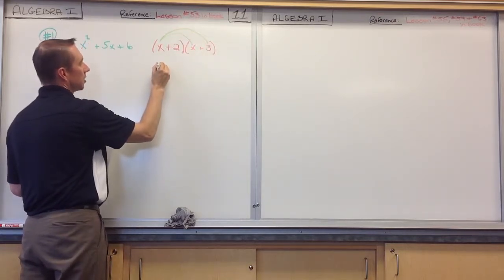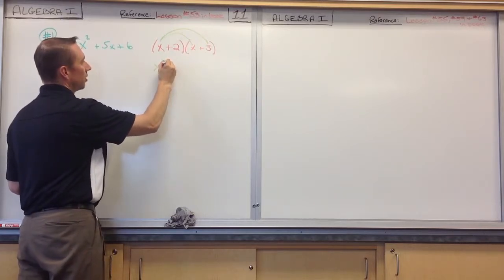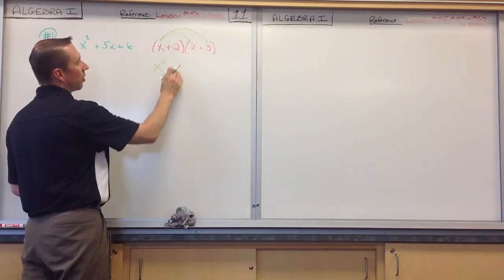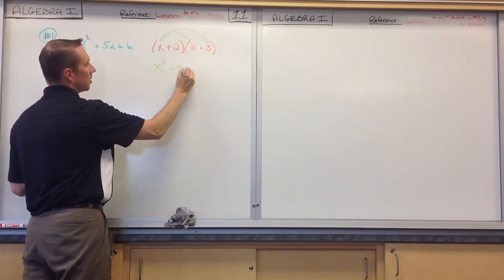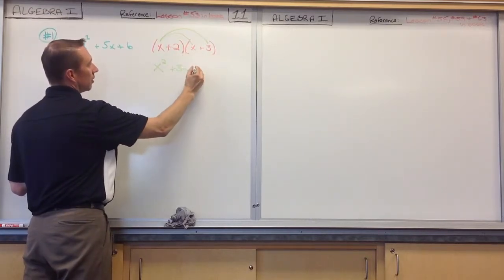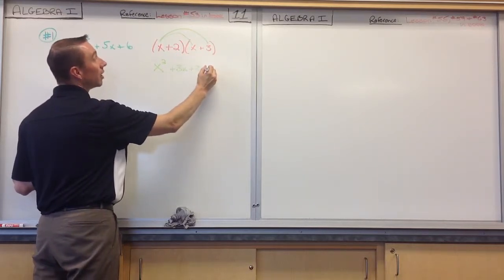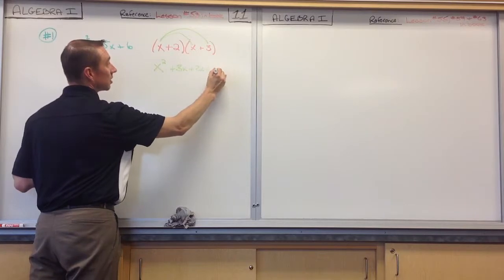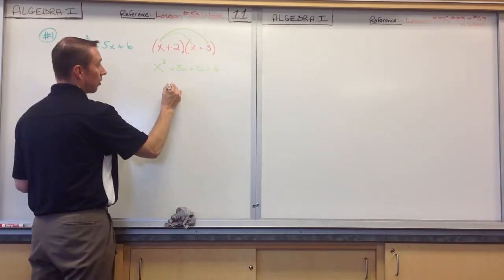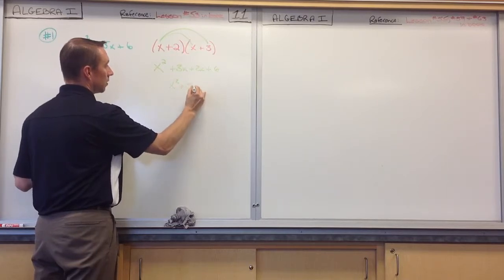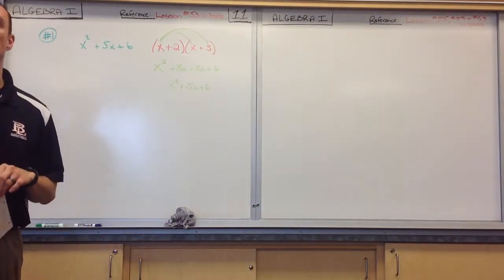What is X times X? X squared. And then what do we get when we do 3X? 3X. And what do we get here? 2X. And what do we get here? Plus 6. And then we collect like terms. And what do we get? 5X.